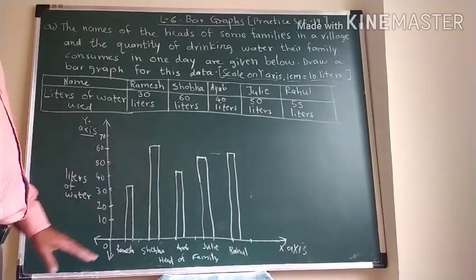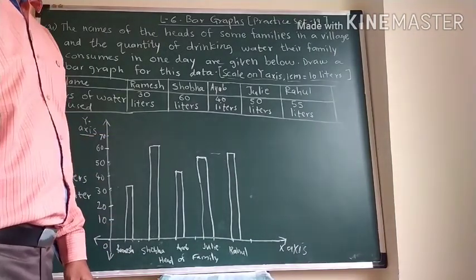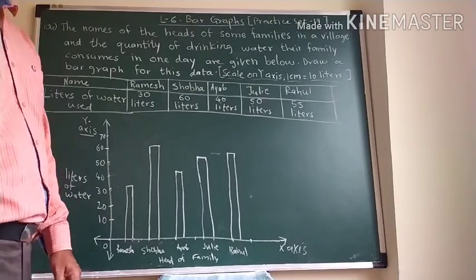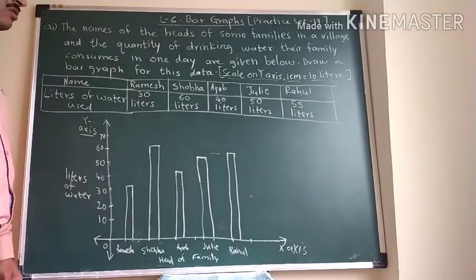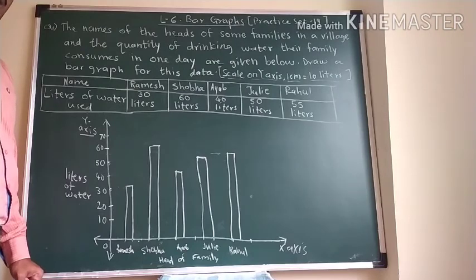If strips are not there and lines are there, then that graph will be called as a line graph. So bars are there on this graph. That's why it is called as a bar graph.